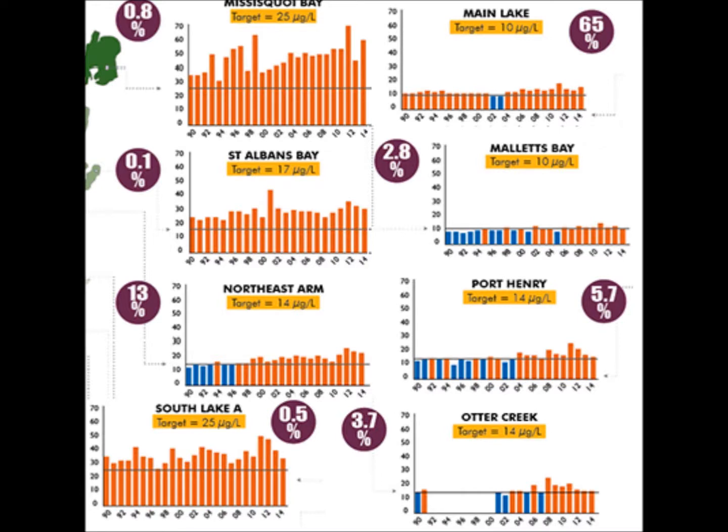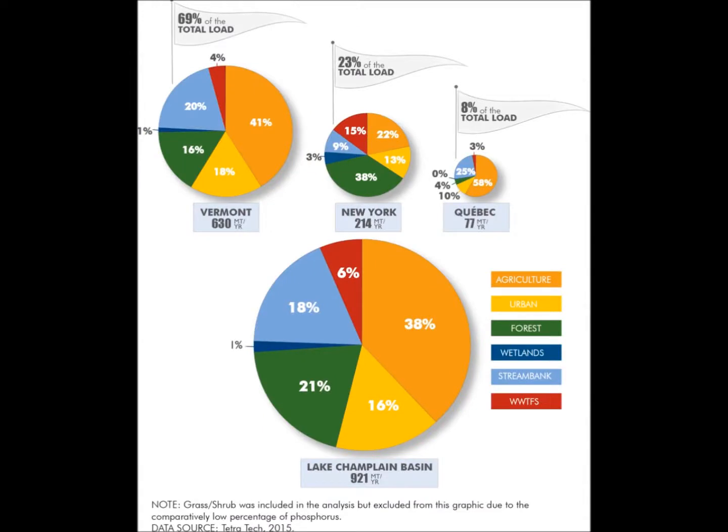This is very worrying, especially when looking at St. Albans Bay, which has the highest recorded levels of damaging blue-green algae in the state. This next graphic shows the loads of phosphorus that each state or country connected to the lake brings, as well as how much comes from each kind of source. Vermont has the largest impact, with 69% of the total load. The source that has the greatest overall impact is agricultural land use, followed by forest land use, stream bank erosion, and urban use. Most of these sources are considered non-point, which account for 90% of the total phosphorus pollution in the lake.